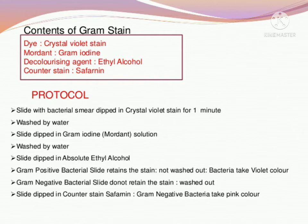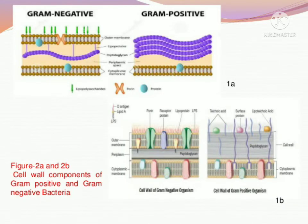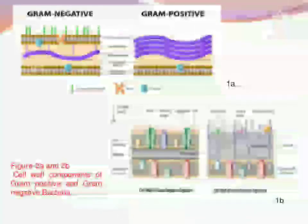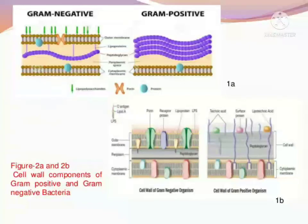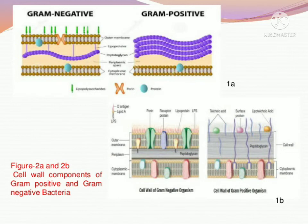We call the colorless bacteria — which lost the pink colour — gram negative bacteria. Then we apply a red colour dye called safranin. In the comparative study: gram positive bacteria have a single layer cell wall. Gram negative bacteria have a double layer — an outer membrane and inner membrane — with a lipid layer in between.